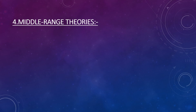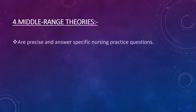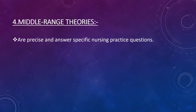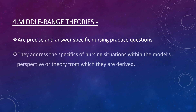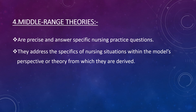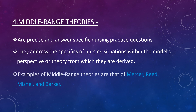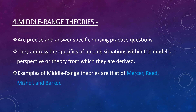Number four is middle range theories. These are precise and answer specific nursing practice questions. They address the specifics of nursing situations within the model's perspective or theory from which they are derived. Examples of middle range theories are that of Mercer, Reed, Michelle and Barker.